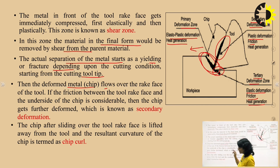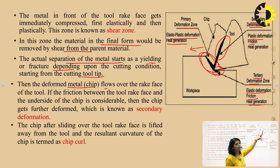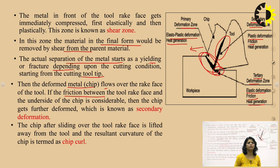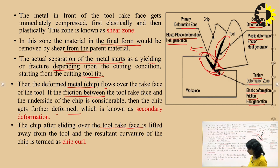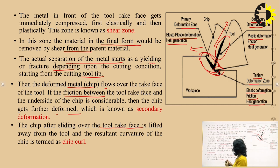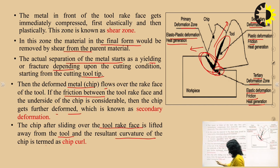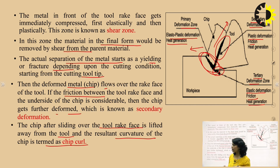The deformed metal — the chip — then flows over the rake face of the tool. If friction between the tool rake face and the underside of the chip is high, the chip gets further deformed, which is known as secondary deformation. After sliding over the rake face, the chip is lifted away from the tool. The resultant curvature of the chip is termed the chip curl — we get a ribbon-like chip here.